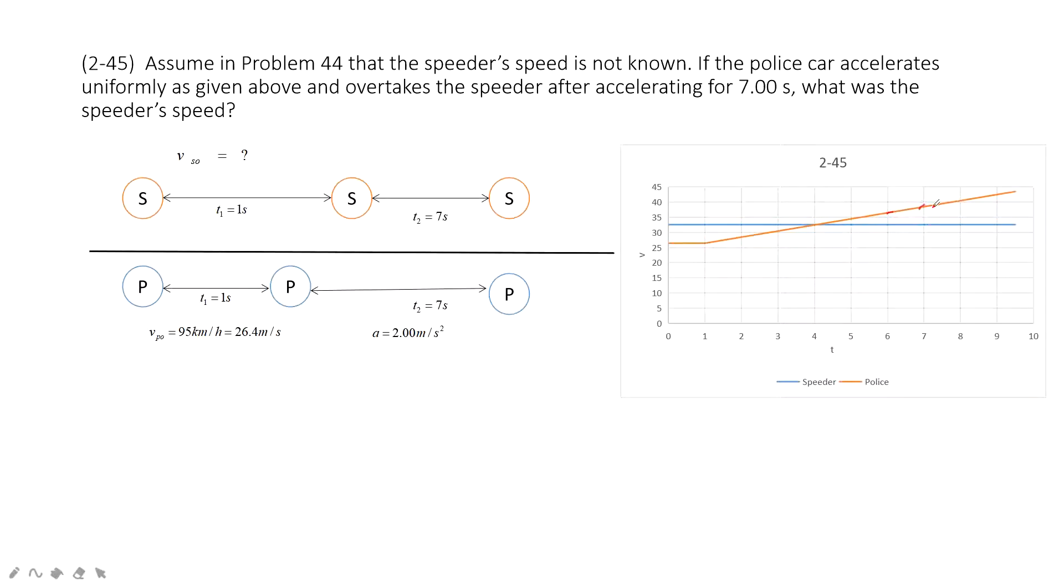So, this part should have the same area, can compensate with this part. So, when we consider these problems, we can see the displacement for the speeder and the police are the same, correct?